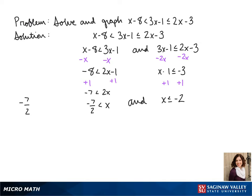Our x can be anything between these numbers or negative 2, so negative 2 will get a bracket, and we're going from negative 7 halves to negative 2.